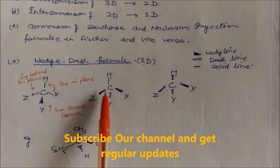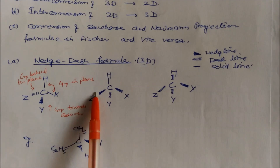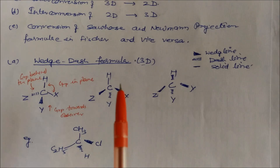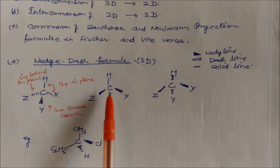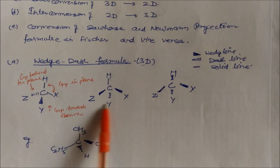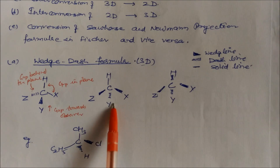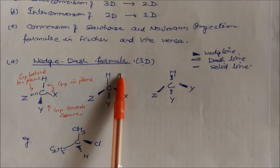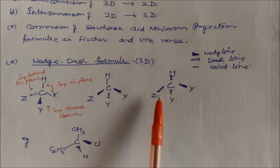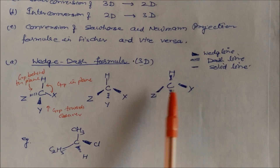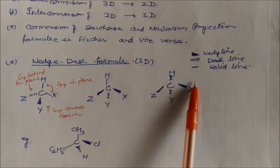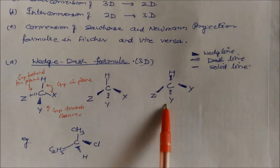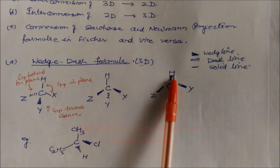In a second representation, X and Z are toward the observer while Y is behind the carbon — behind the plane of the paper — and H is along the plane. In a third way, Z and X are toward the observer, Y is below the plane, and H is positioned accordingly. These are three valid ways to represent the same three-dimensional molecule.